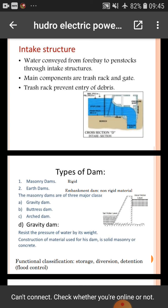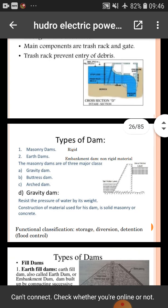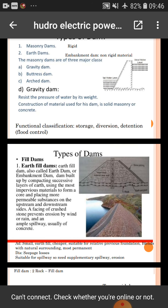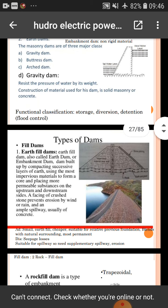Types of dams: masonry dams, earth dams, gravity dams, buttress dams, and arch dams. Gravity dams resist the pressure of water by their own weight. Earth-filled dams, also called earth dams or earthen embankment dams, are built up by compacting successive layers of earth using the most impervious material to form a core. Riprap of crushed stone prevents erosion by wind or rain, and the spillway is only in concrete.